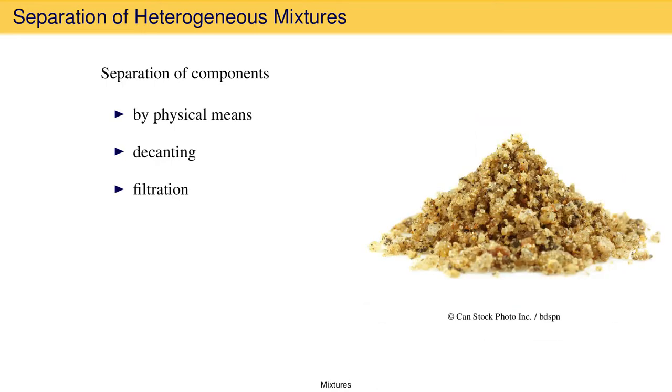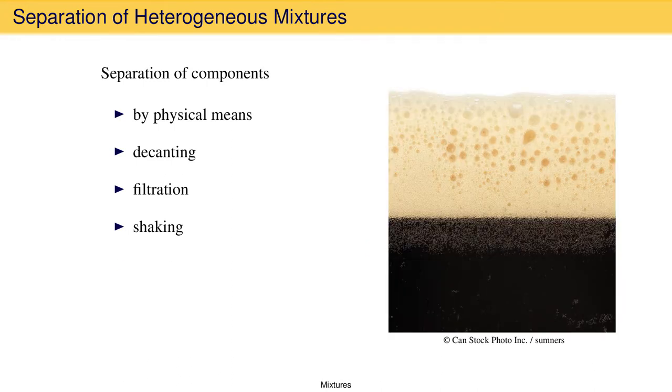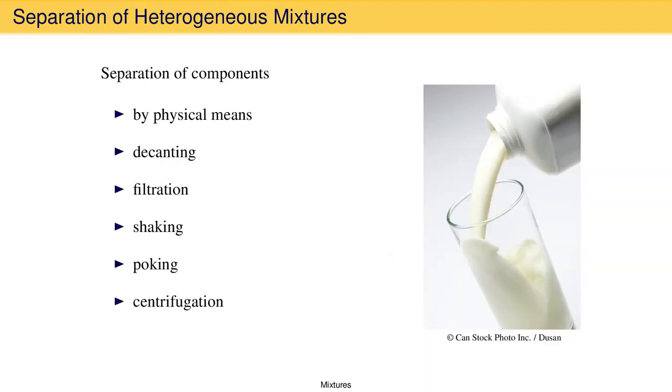The sand can be separated by shaking, causing the smaller pieces to go to the bottom of the container. The beer foam can be separated by poking at it to burst all the bubbles. And finally, the milk can be separated by centrifugation, which is the process of using a centrifuge to spin a sample rapidly with the goal of increasing the effective gravitational field experienced by the sample so that small particles, such as globules of fat, settle to the bottom of the container.